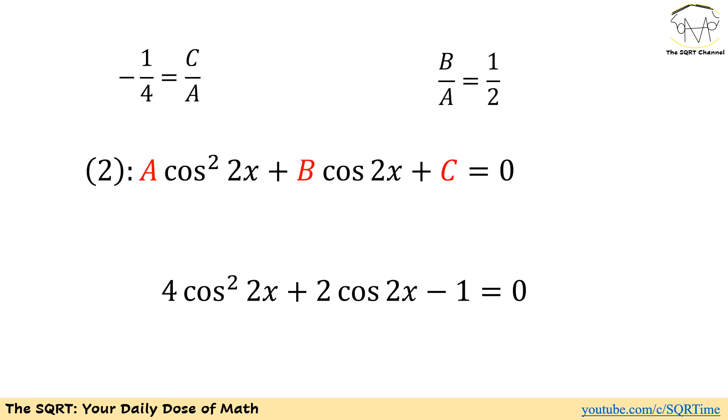If we apply all the values then C over A can be written as minus 1 over 4. Now we have two things to remember: we have B over A equals to 1 over 2 and we have C over A equals to negative 1 over 4.